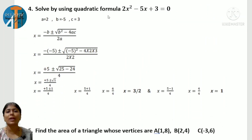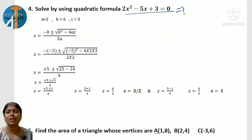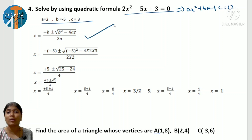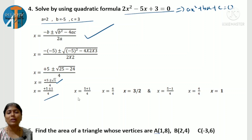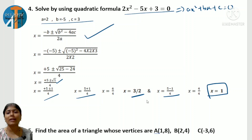Next, solve using the quadratic formula. Compare with the general formula ax² + bx + c = 0 and write the a, b, c values. Apply x = [−b ± √(b²−4ac)] / 2a. After substituting and simplifying, √1 = 1. Taking the plus case: (5+1)/4 = 6/4 = 3/2. Taking the minus case: (5−1)/4 = 4/4 = 1. So x = 3/2 and x = 1.